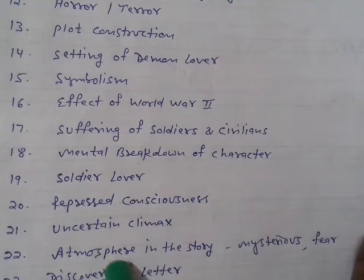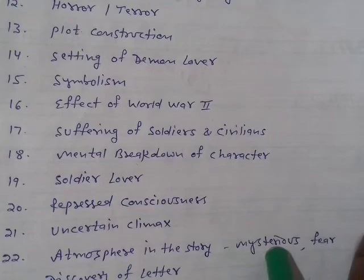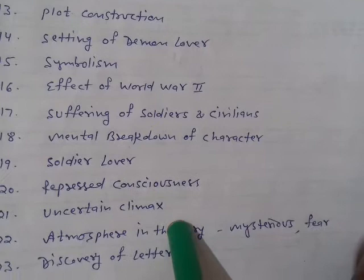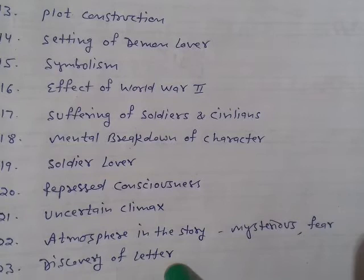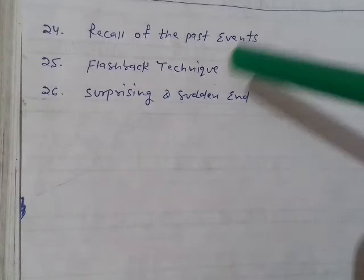The 21st is uncertain climax — the climax is uncertain. The 22nd heading is atmosphere — what kind of atmosphere has been given in this story. A very fearful and very mysterious atmosphere has been presented by Elizabeth. The 23rd one is discovery of letter, which is also a very interesting point.